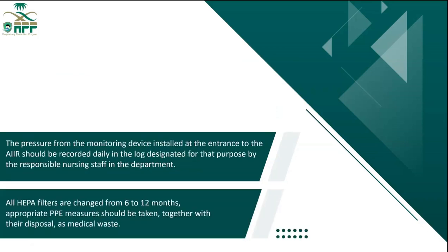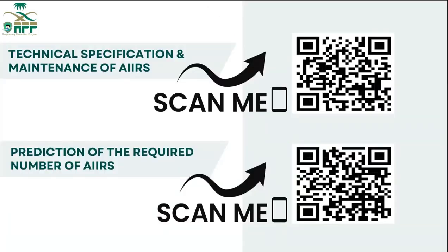The pressure reading from the monitoring device at the entrance to the AIIR should be recorded daily by healthcare workers in the designated log. Typically, the nursing staff responsible for the case manages this. The room has a supply fan and an exhaust fan, and after the exhaust fan there is a HEPA filter. This filter needs to be changed every six months to one year, or according to the manufacturer's instructions, to ensure filtration of air before it exits the healthcare facility. The HEPA filter must be disposed of as medical waste following a specific procedure. All technical specifications and required maintenance for these rooms can be accessed through the barcode provided in the slides.